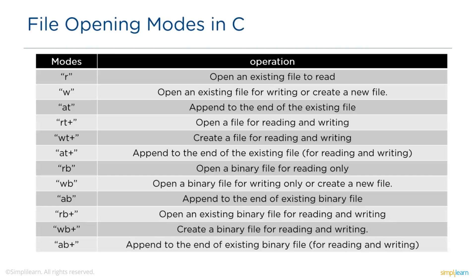Mode a+ appends data at the end of the existing file and opens it for reading and writing. Mode rb opens an existing binary file for reading only. Mode wb creates and opens an existing binary file for writing. Mode ab appends at the end of the existing binary file. Mode rb+ opens an existing binary file for reading and writing. Mode wb+ creates and opens a binary file for reading and writing. Finally, mode ab+ appends to the end of the existing binary file for reading and writing.